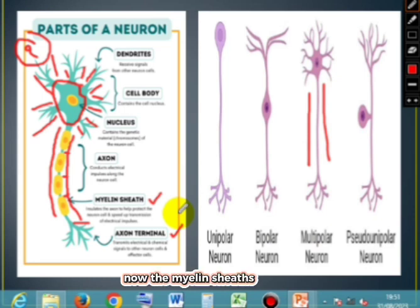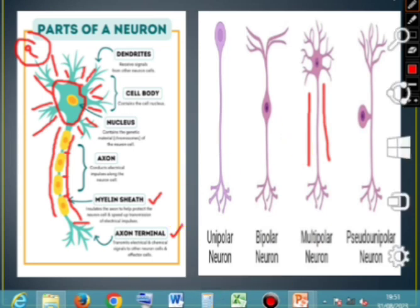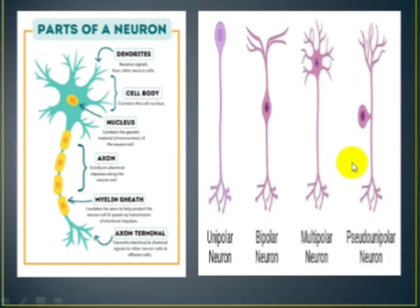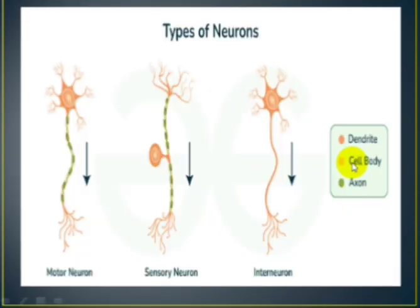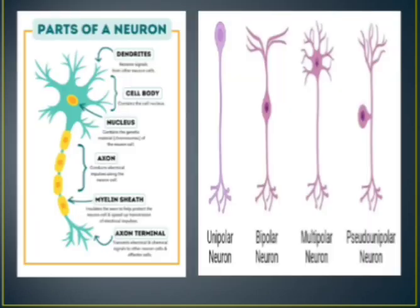The myelin sheets of neurons can be formed either by oligodendrocytes or by Schwann cells.